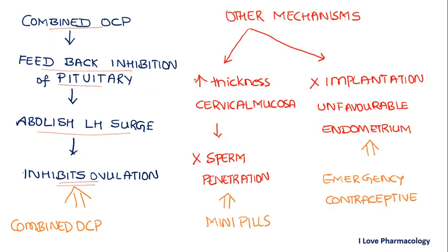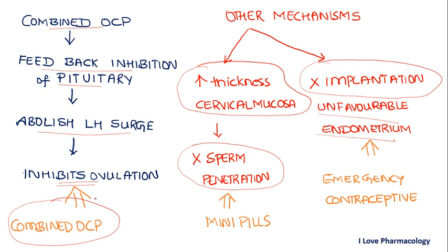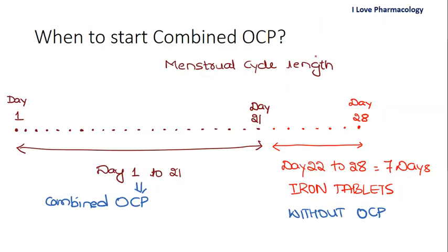Two additional mechanisms are also involved. Progesterone increases the thickness of the cervical mucosa, thereby preventing sperm penetration or migration. Progesterone can also inhibit secretion from the fallopian tube and inhibit implantation by creating an unfavorable endometrium. So combined oral contraceptives work primarily by inhibiting ovulation, progesterone-containing pills inhibit sperm penetration, and emergency contraceptives act by inhibiting implantation.